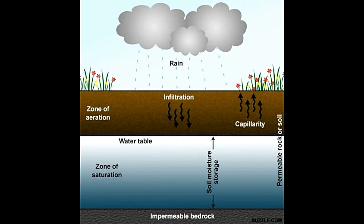Another portion of rainwater gets soaked by the soil and subsequently is absorbed by the trees and plants, or evaporated again due to the sun's heat. The third and last portion of the rainwater gets soaked below the plant's root zone and continues to move downwards via percolation until it reaches the impermeable layer, where it gets stored in the form of groundwater. This results in the formation of an underground water table, which accounts for a large portion of the fresh water on Earth. Groundwater feeds the lakes and also supplies water to both natural and artificial wells.